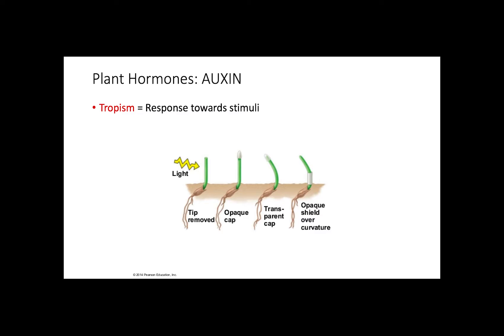Tropism is simply a growth response that results in plants curving towards or away from stimuli. Think about a sunflower and how it moves towards the sun. Because the stimulus is the light, this will be called phototropism.